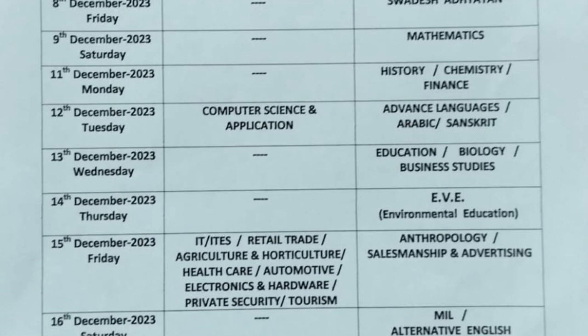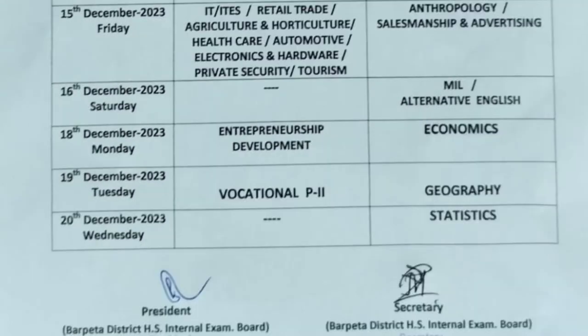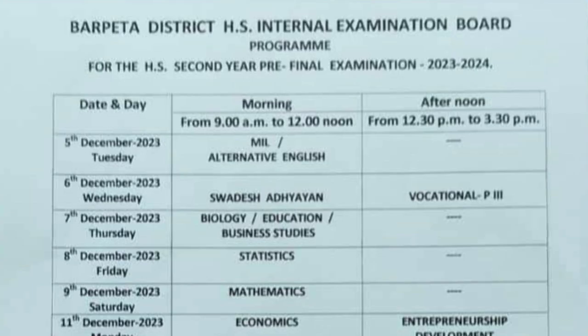Salesmanship and Advertising on the 16th. MIL, Alternative English on the 16th. 18th: Entrepreneurship, Development and Economics. 19th: Vocational Part 2. 20th: Geography. 20th: Statistics.